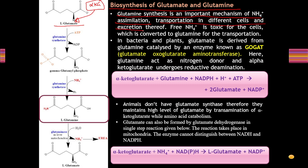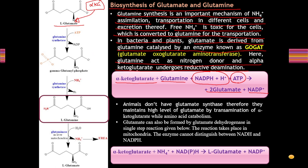The reaction catalyzed by GOGAT is: alpha-ketoglutarate plus glutamine yields two glutamates, using reducing equivalents and ATP. Glutamine synthesis is an important mechanism of ammonium assimilation and transportation in different cells. Free ammonium ion is toxic for the cell and is converted into glutamine for transport. Glutamate can also be formed by glutamate dehydrogenase in a single-step reaction in the mitochondria, where the enzyme cannot distinguish between NADH and NADPH: alpha-ketoglutarate plus ammonia plus NADPH yields glutamate.